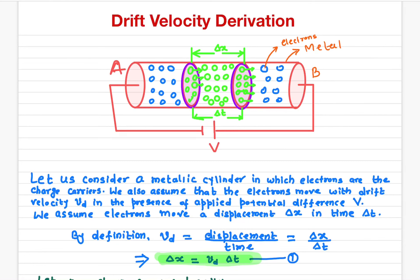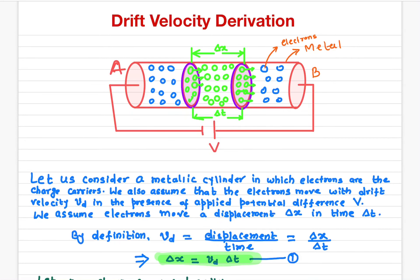Let us consider we have a metal conductor. In a metal there are an ocean of electrons, and the electrons move randomly without applying a potential difference. If there is no battery applied, the electrons move randomly and the net effective drift velocity is zero. But once we apply a potential difference or a battery, it sets up a preferred direction for the electrons to move in — that means it applies a force onto each electron or each charge carrier.